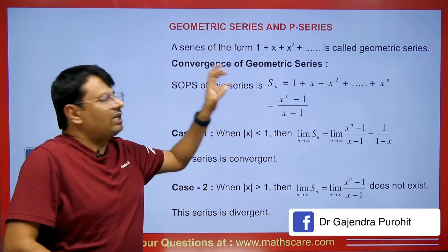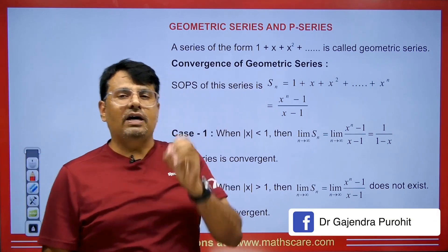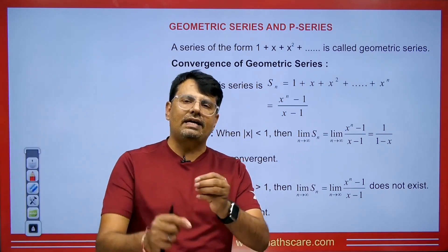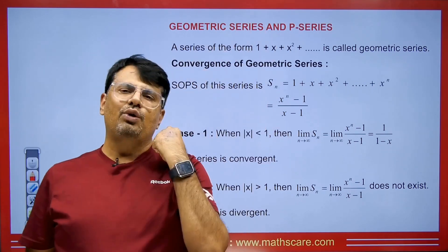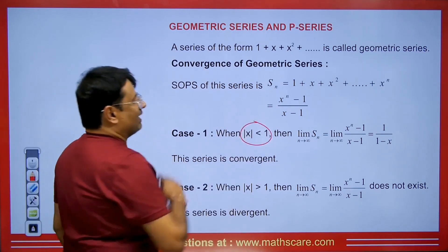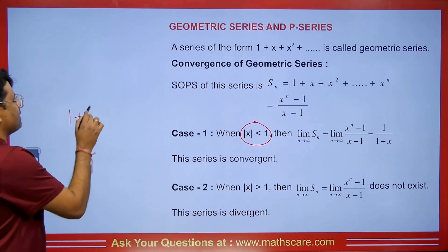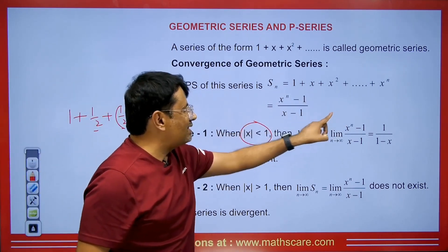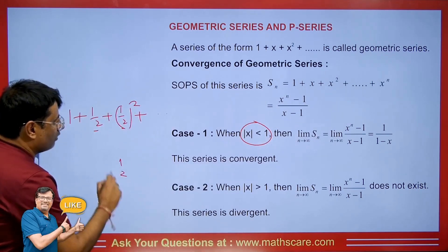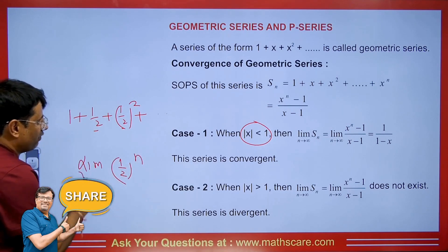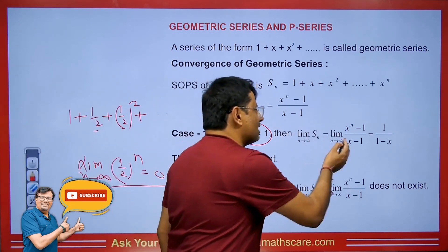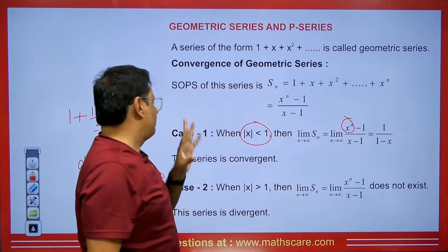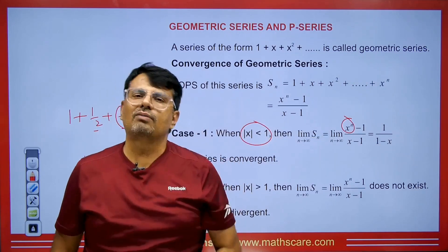What is SN? It is the nth partial sum, and the sequence of partial sums is always monotonically increasing. To know whether the series is convergent, we put n tending to infinity in SN and see the final value. If the value of x is less than 1, for example a value like 1/2 to the power n, as n tends to infinity its value becomes 0. So we get a finite value of 1 upon 1 minus x. This means the series is convergent.